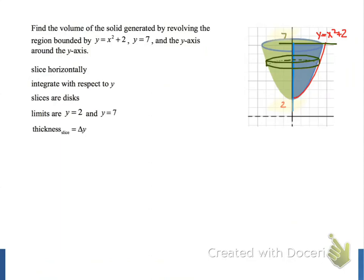The thickness of each slice is going to be delta y. Next, we need to find the radius of our circular disks.